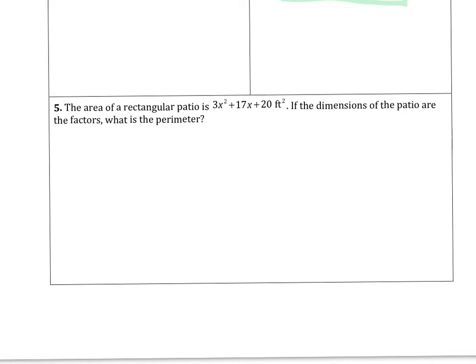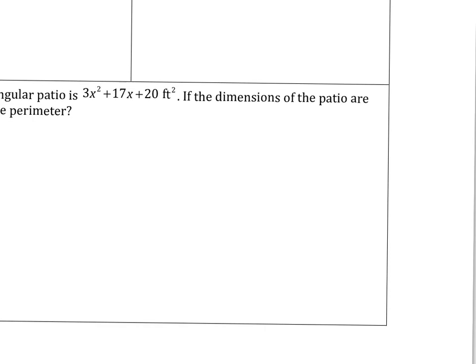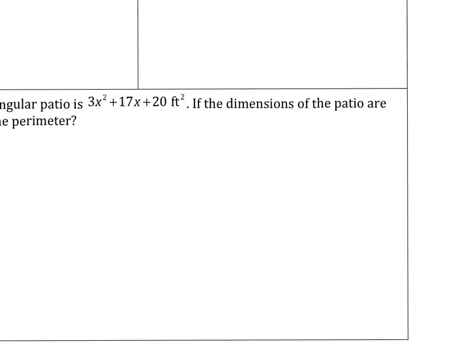The last problem we're going to look at is more of a word problem. The area of a rectangular patio is 3x squared plus 17x plus 20 feet squared. If the dimensions of the patio are factors, what is the perimeter? So we can factor this real quick. And then we're going to try to find out what the perimeter is. Just a heads up here. Remember that whatever I get right here, so a times b here, that's going to give you the area. But to find the perimeter, we have to do a plus b plus a plus b. So once we find the dimensions, we're going to add them up all the way around. Now let's go ahead and snowflake this right here.